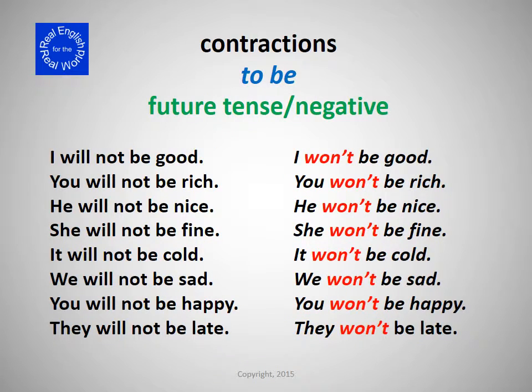Contractions to be in the future tense, negative. I will not be good. I won't be good. You will not be rich. You won't be rich. He will not be nice. He won't be nice.